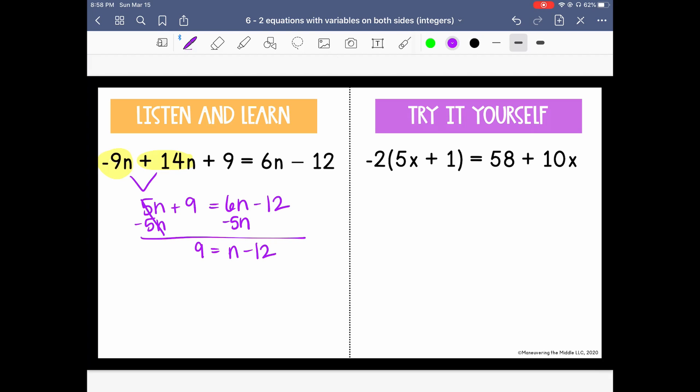Now to isolate n, I just need to add 12 to both sides. 9 plus 12 is 21. So we know for this, n is equal to 21. So pause it and try the next example.